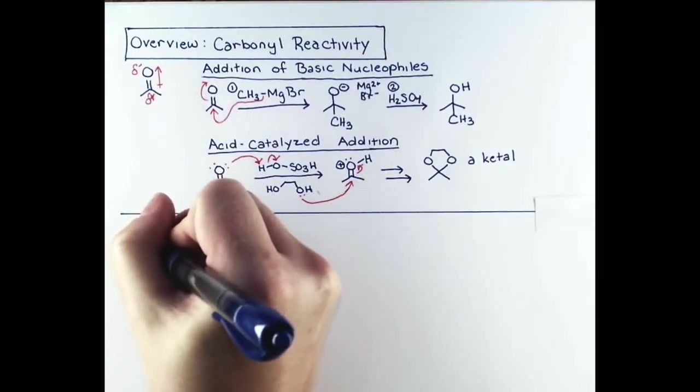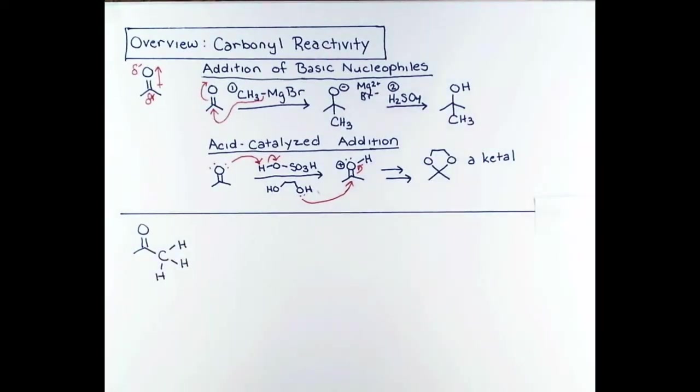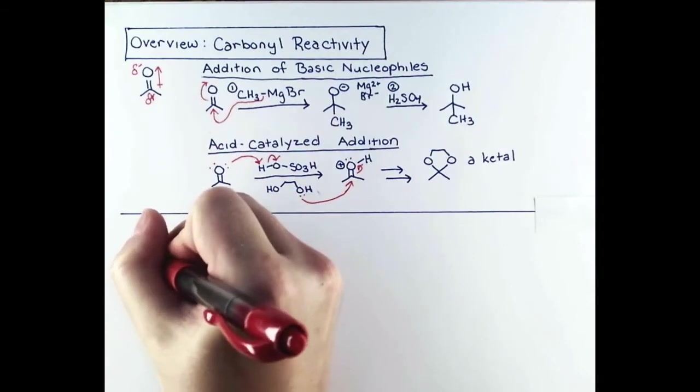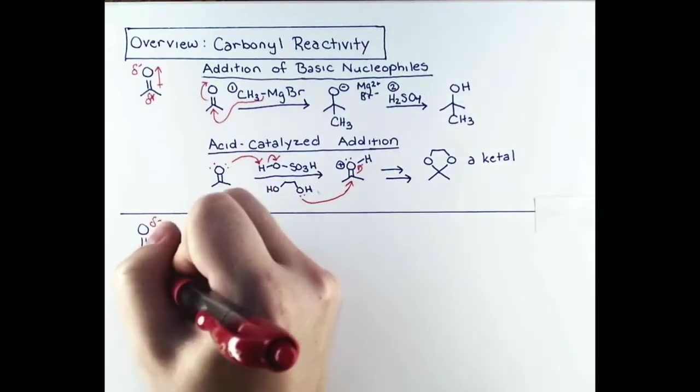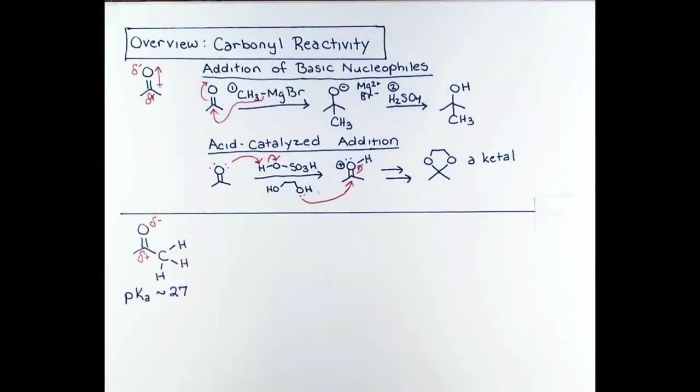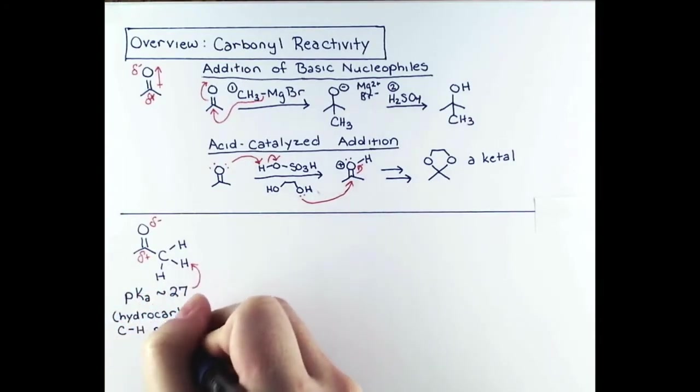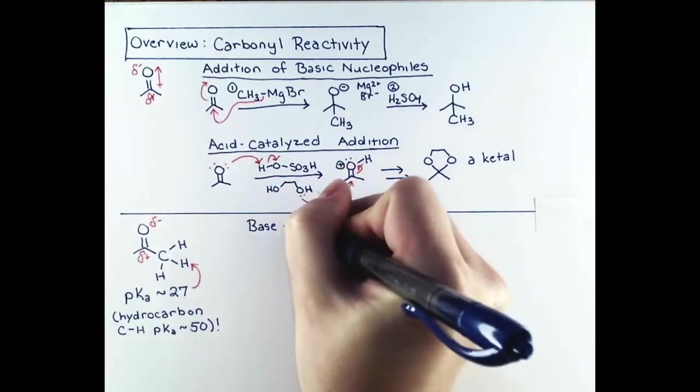The dipole in acetone also affects the hydrogen atoms that are adjacent to the carbonyl. They feel the pull of the dipole in the molecule and consequently become more acidic, with a pKa of 27. Now this might not seem too acidic, but compared to a regular unsubstituted hydrocarbon, which has a pKa of around 50, this is a substantial decrease.